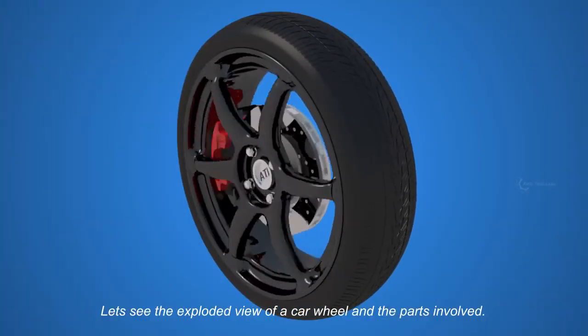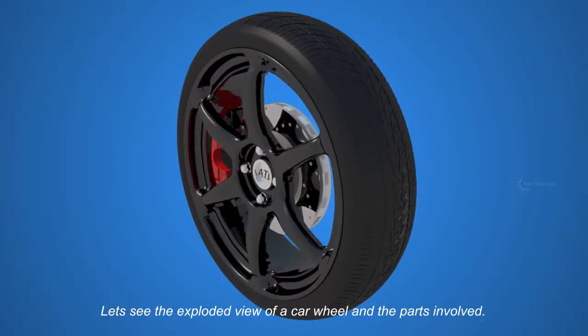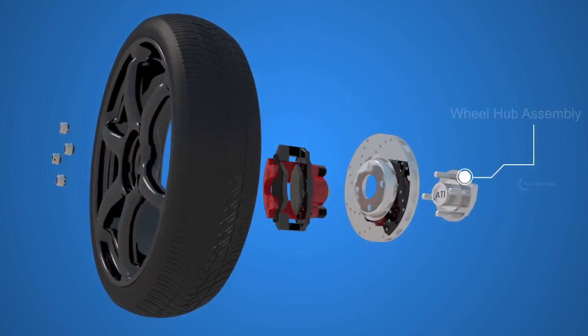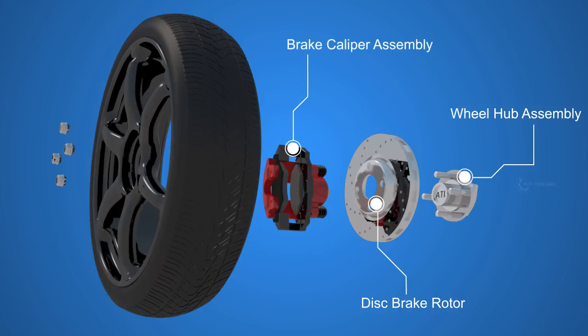Let's see the exploded view of a car wheel and the parts involved. The wheel hub assembly, the disc brake rotor, the brake caliper assembly, the wheel, and the lug nuts.